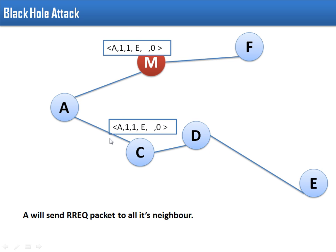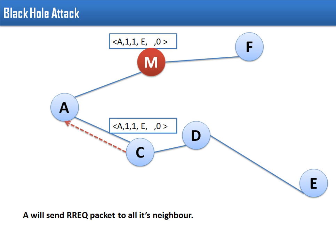What will the malicious node do? So what will this node M do? Okay, this is the backtrack. After receiving this packet, C would also know that in order to reach A, I have to transmit the packet in this direction.